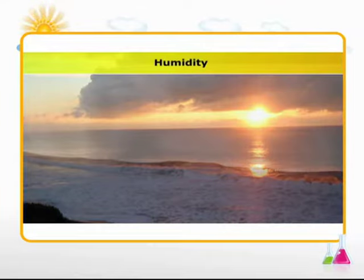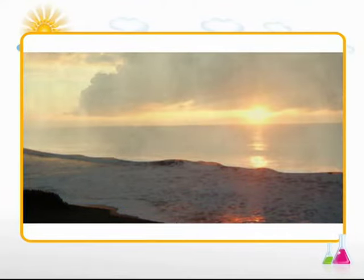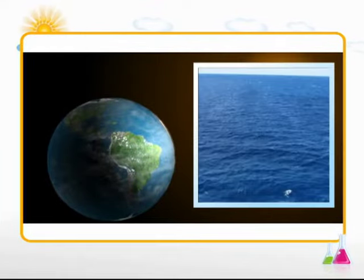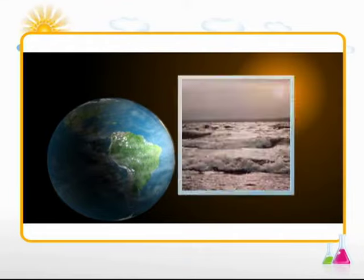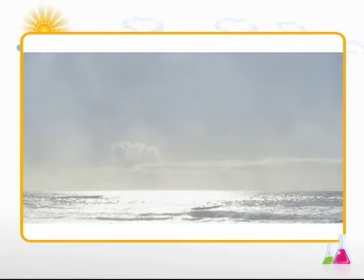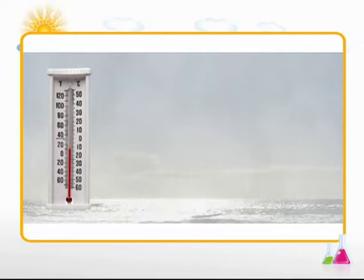What is humidity? Humidity refers to the amount of water vapor in the air. How does water vapor get into the air? Well, our Earth, being a watery planet, is covered with huge water bodies called oceans and smaller water bodies like seas, lakes, and rivers. Water vapor in the atmosphere is mainly due to evaporation of water, which is a continuous process.